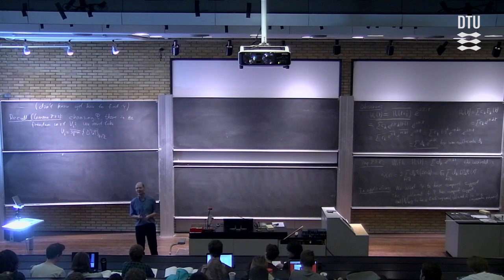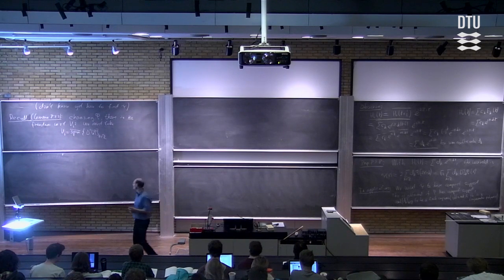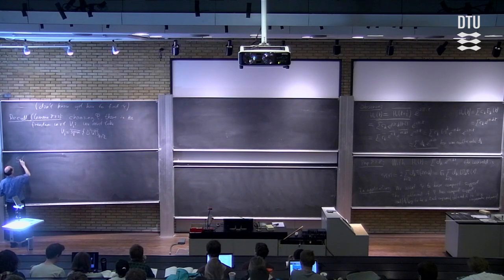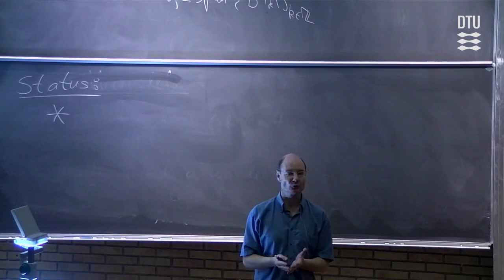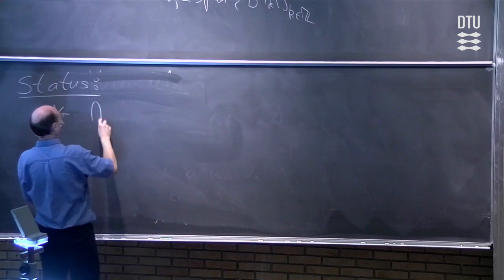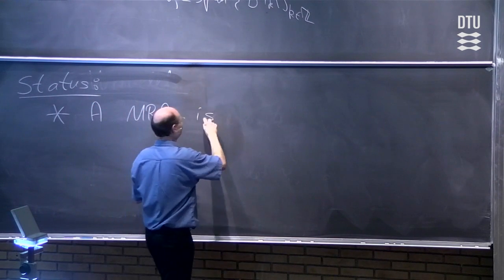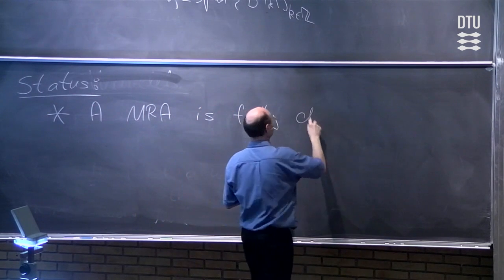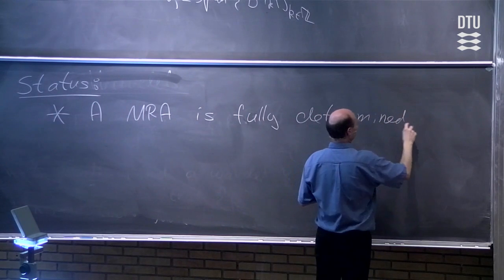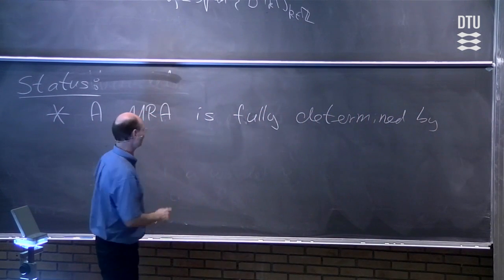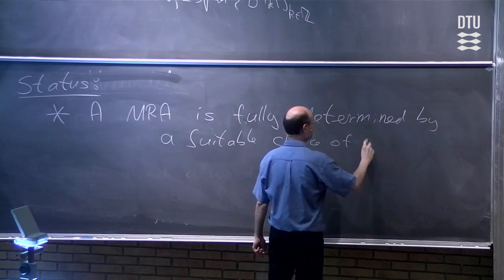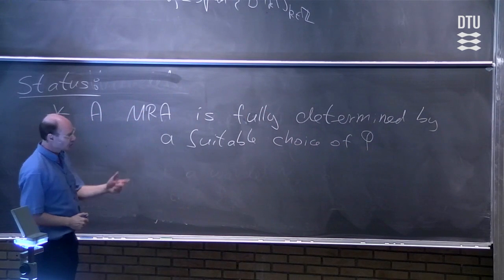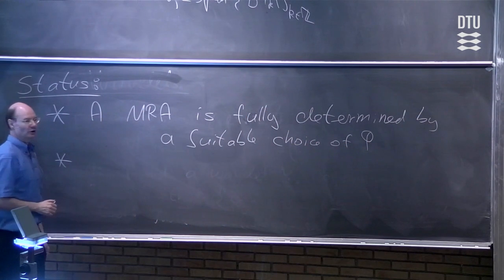This is a very long project to confront the wavelengths. Let's make a statement of how far we are now. What we know is that the multi-resolution analysis is generated just by the choice of a suitable function φ. This is the first statement we have. So a multi-resolution analysis is fully determined by what I would call a suitable choice for the function φ. And what we also know now is that as soon as we have this function φ in our hands, we can construct the wavelet.